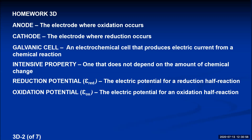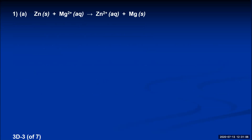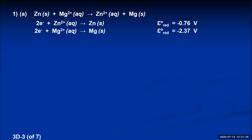Number one: assuming concentrations of one molar for all of the following solutions, use standard reduction potentials found on handout six to determine whether the following reactions are spontaneous or not. First reaction: zinc plus magnesium ion yields zinc ion plus magnesium. You need to find the two reduction potentials — one that includes zinc and zinc ion, and the other that includes magnesium and magnesium ion. Those reduction potentials are respectively negative 0.76 and negative 2.37.